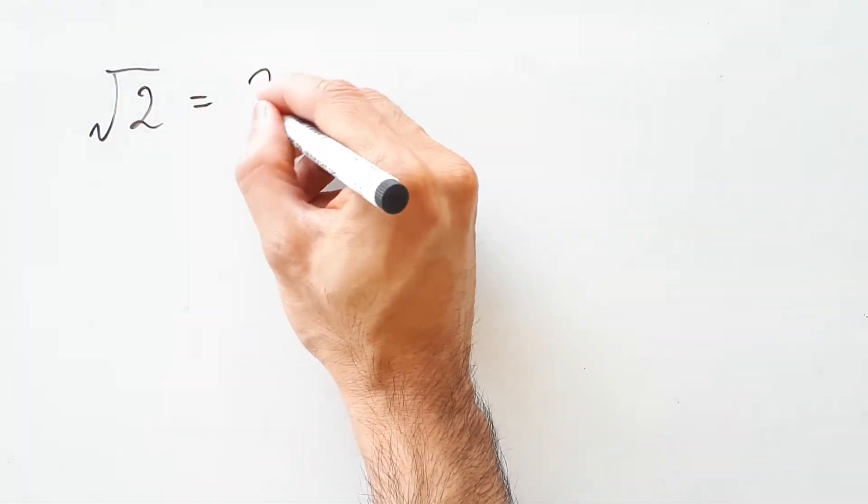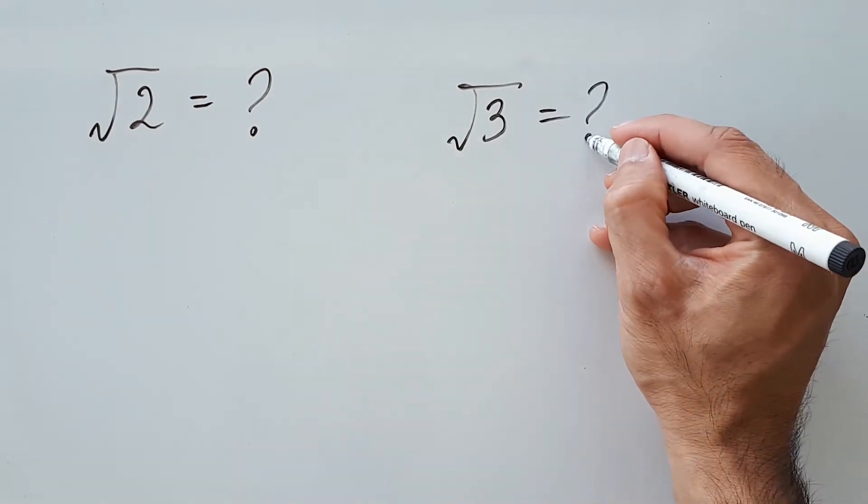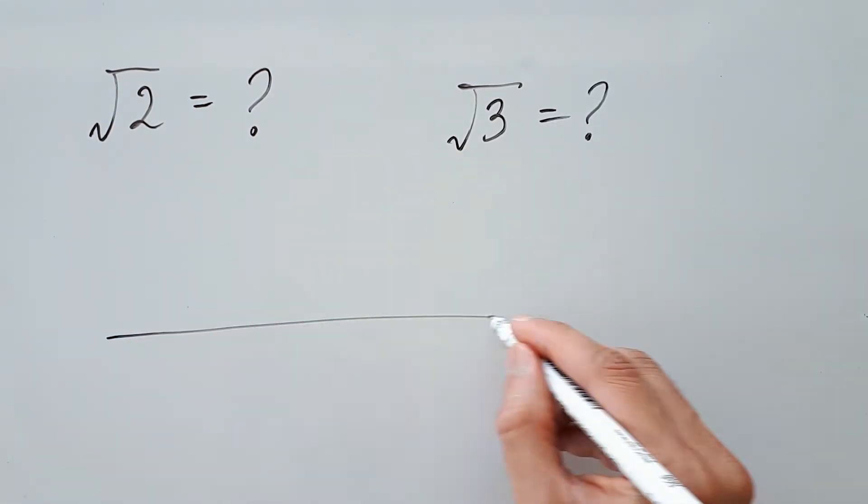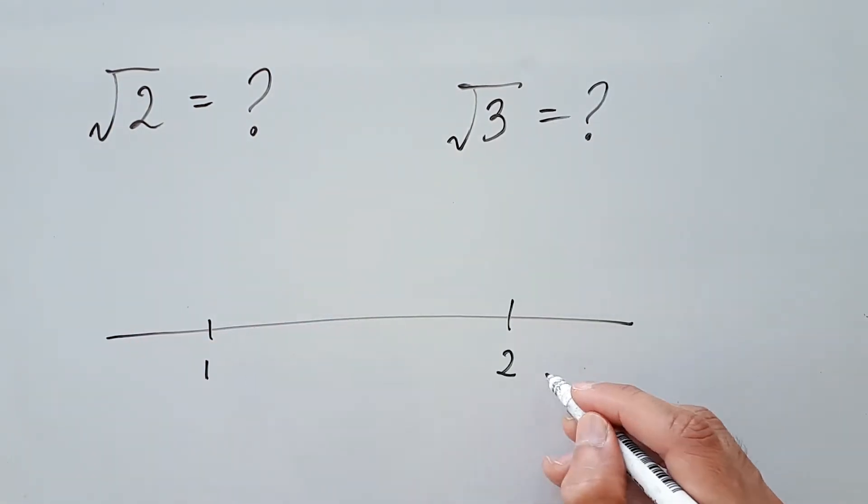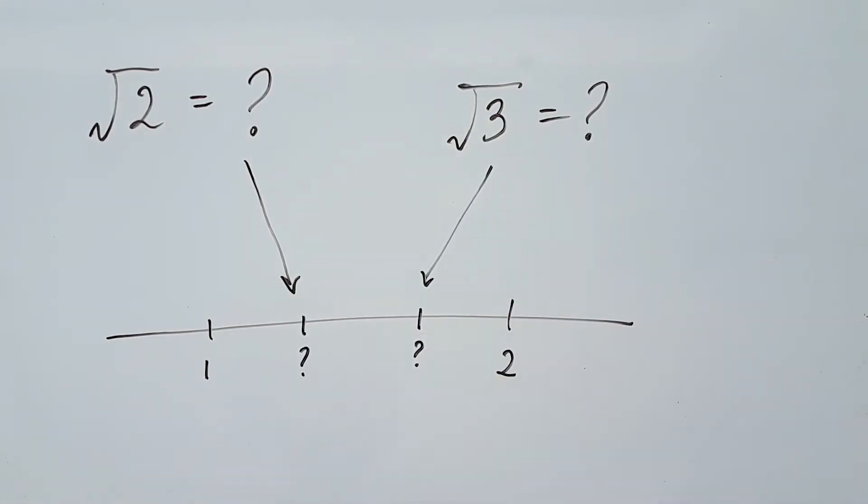What is the value of square root 2? What is the value of square root 3? These are not perfect squares, which means we're going to get decimal values somewhere between 1 and 2, making them fairly difficult to calculate.